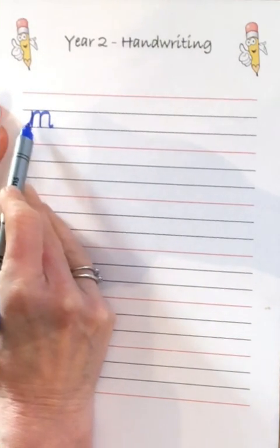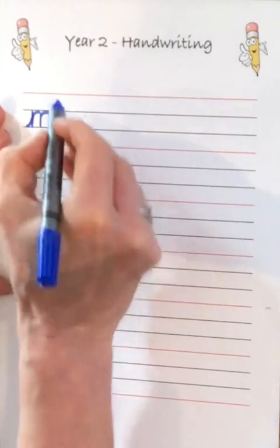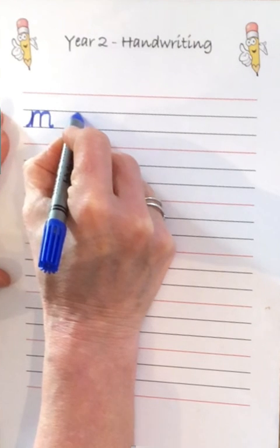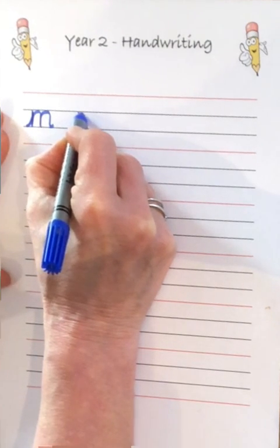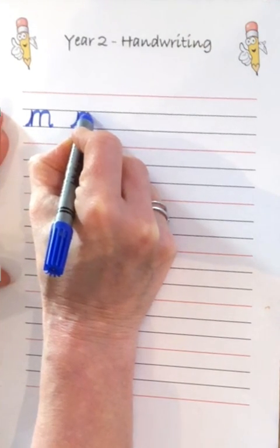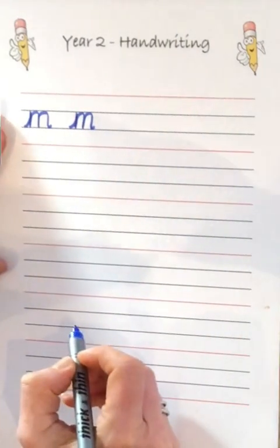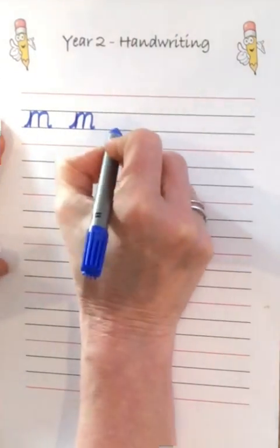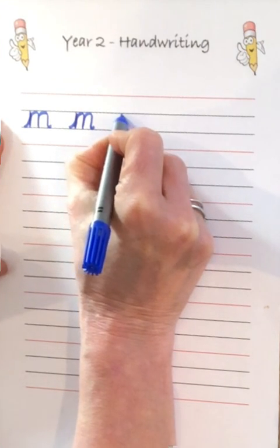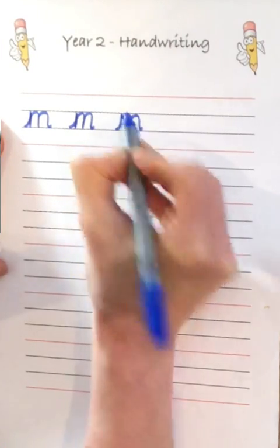Try and keep these two bits the same distance apart because it'll make it look neater. Nice even finger space and then we're going to go again. Up, down to the first grey line, back up to the top grey line and round, down to the grey line, back up to the other grey line, back down to the other grey line and a little exit. I think my first one was better, so we'll try again.